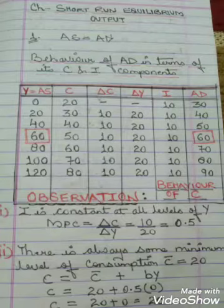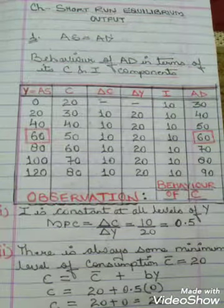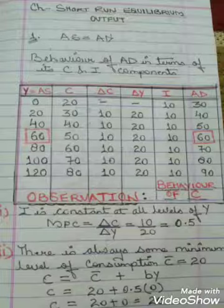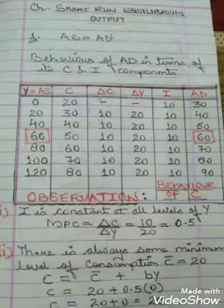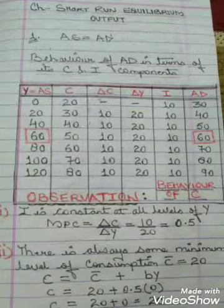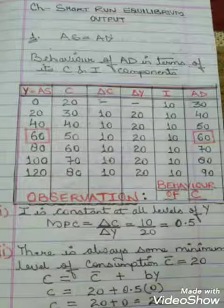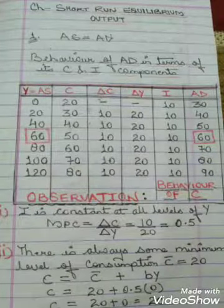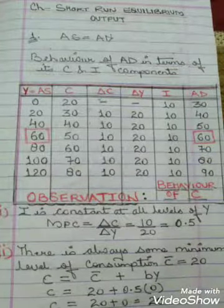Good morning students. In continuation with the chapter on short-term equilibrium output, today we will discuss how equilibrium output or equilibrium GDP is determined in the economy with the help of a table and diagram.